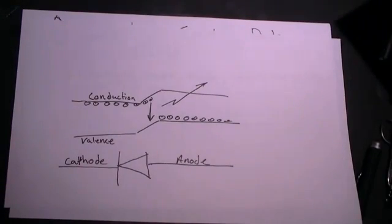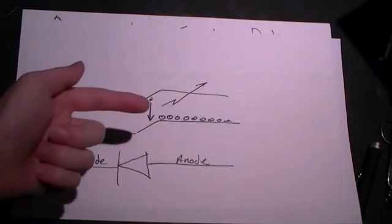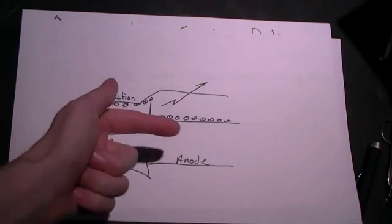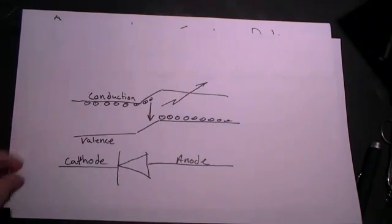Electrons enter from the cathode side in the conduction band, a higher energy state, move towards the holes in the anode, and drop across the band gap and emit a photon.